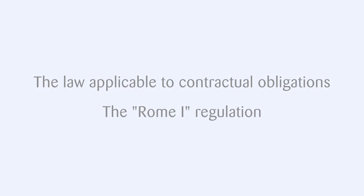The law applicable to contractual obligations: the Rome I Regulation. The first steps to harmonize the rules on applicable law were taken with the negotiation and adoption of the Rome Convention on the law applicable to contractual obligations, which was concluded on June 19, 1980. The Convention came into force on April 1, 1991, with ratification by eight member states.